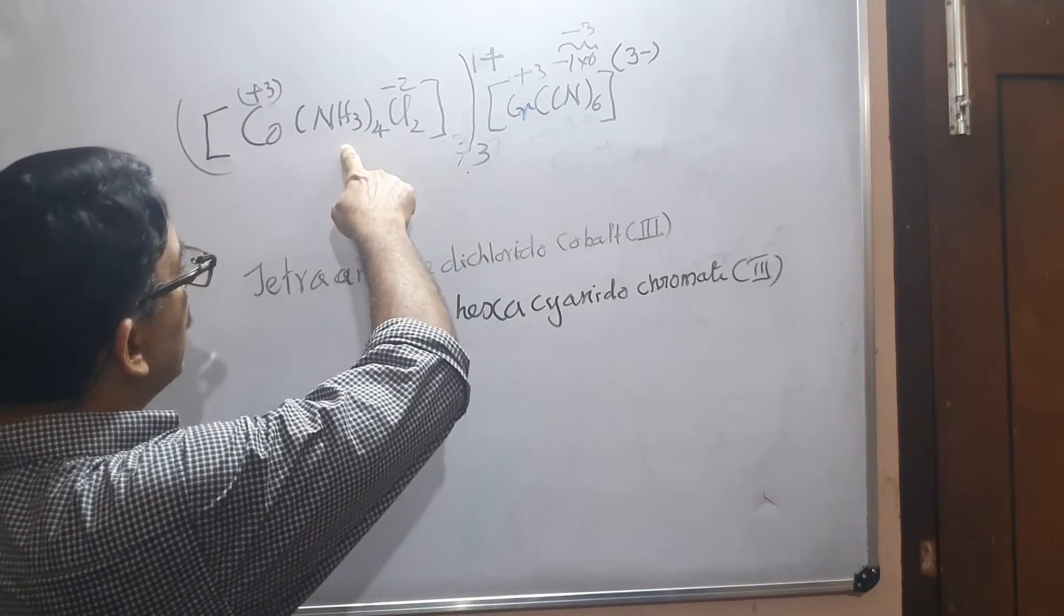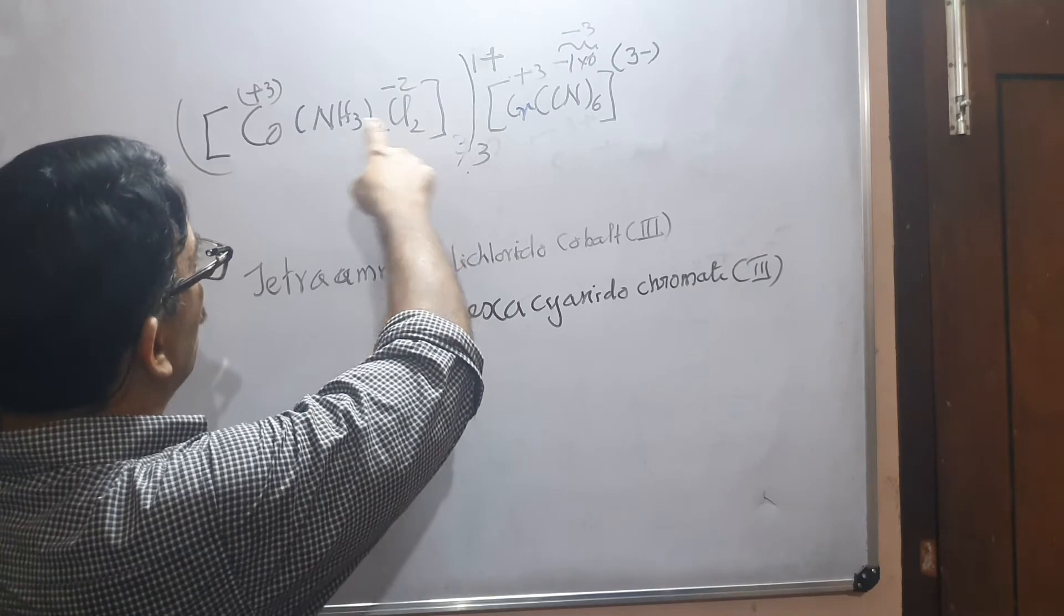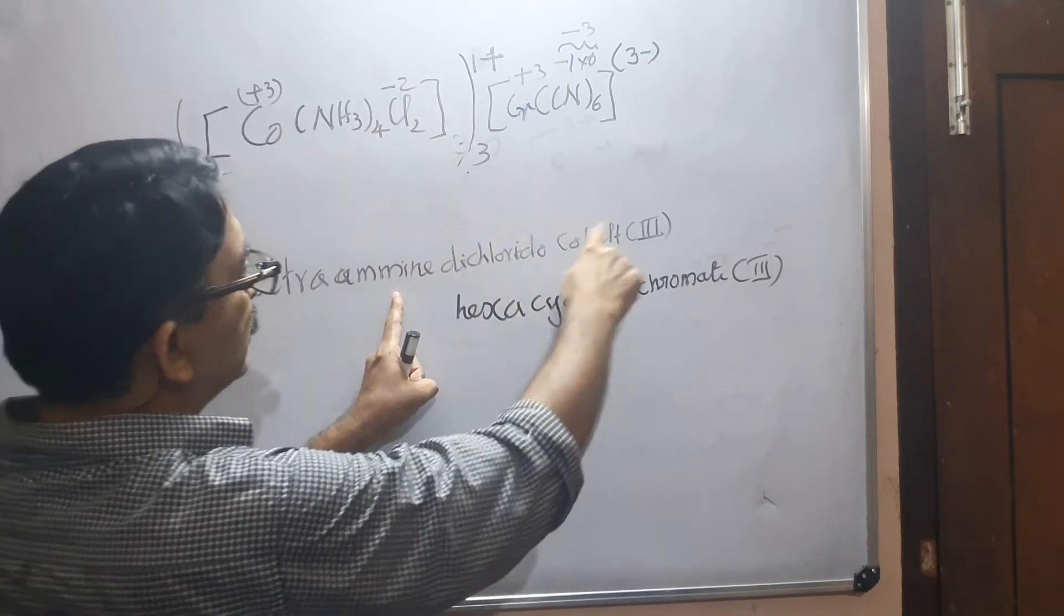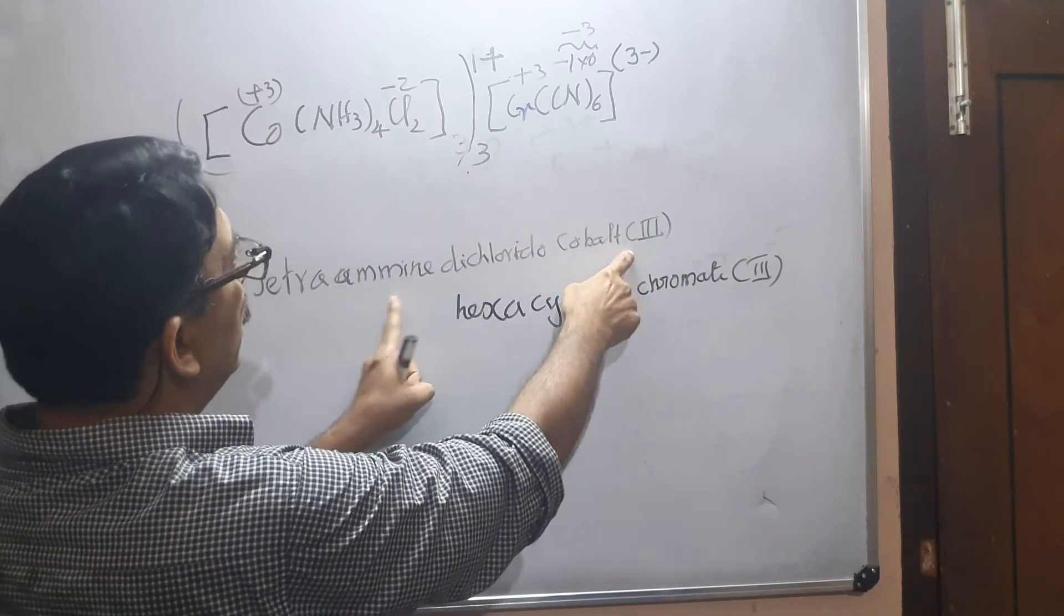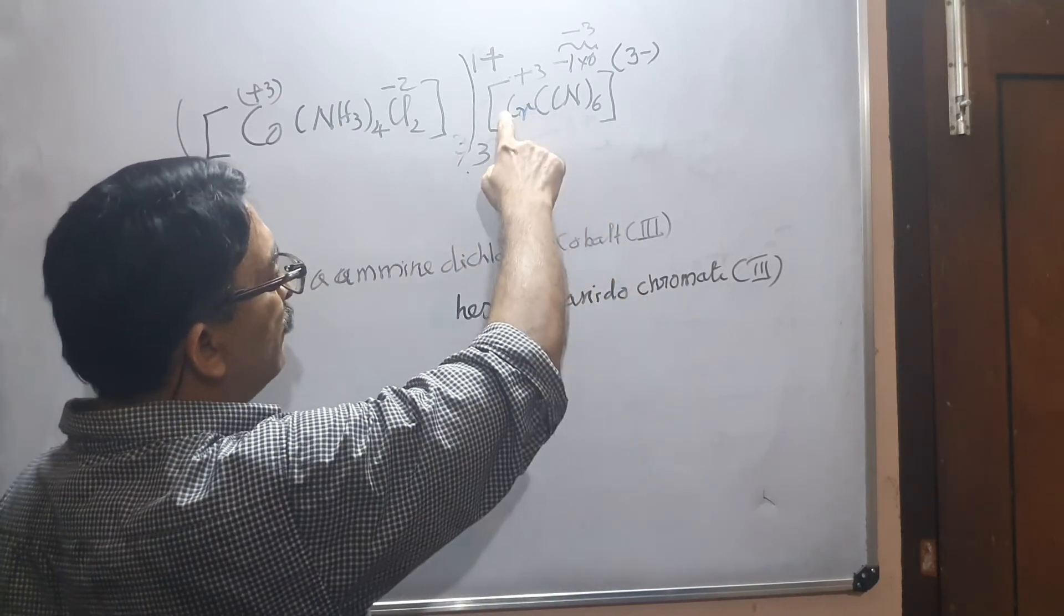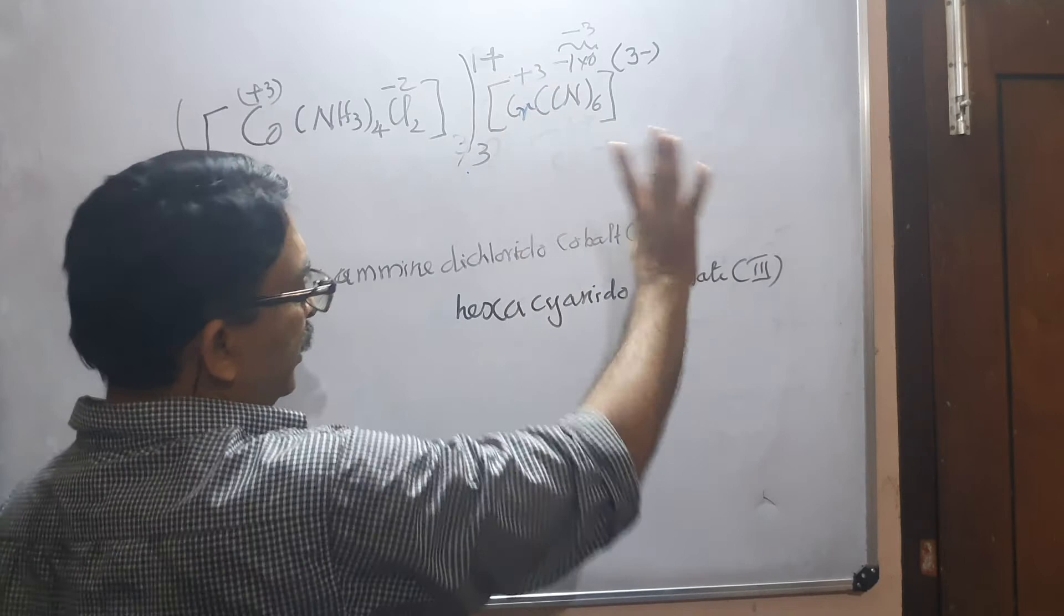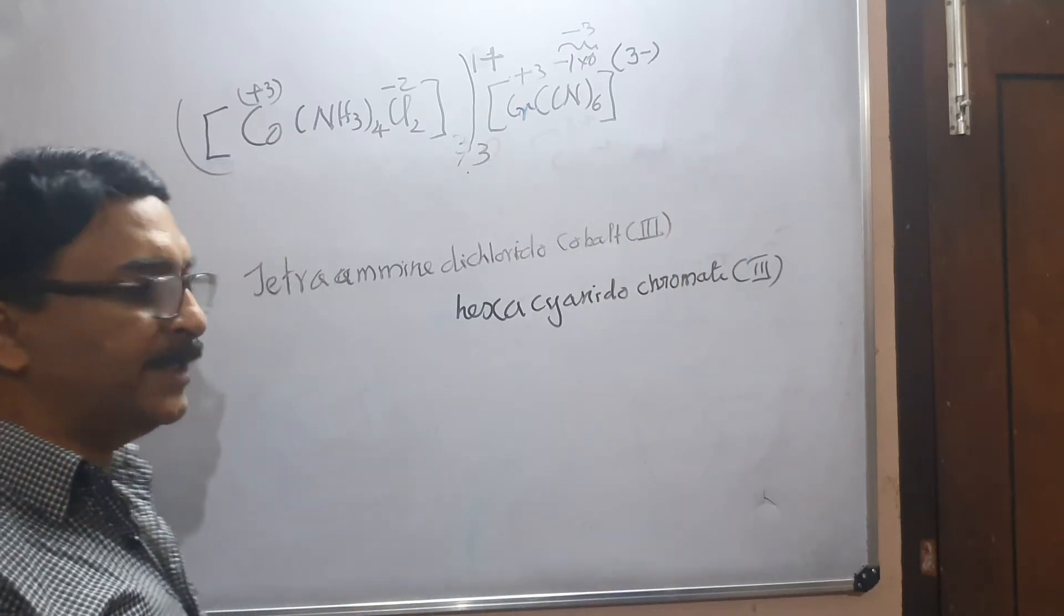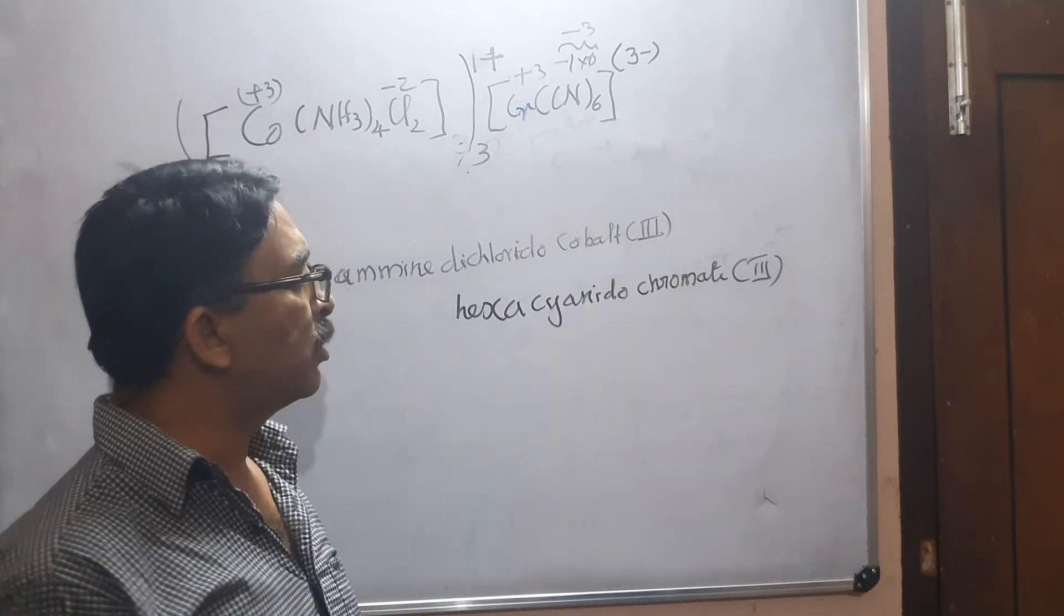Now it is easy. Tetraamine dichloridocobalt(III) space hexacyanidochromate(III). So the complete name is tetraamine dichloridocobalt(III) hexacyanidochromate(III).